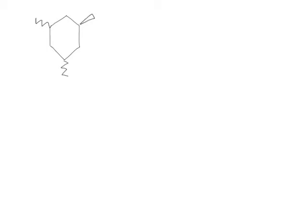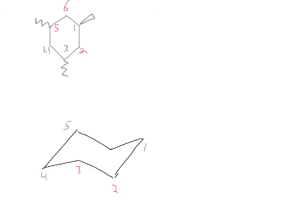The first step is to develop a numbering system so that we can tell one carbon from another. I'll go ahead and do that, starting with 1, 2, 3, 4, 5, and 6. We'll then draw our first chair conformer and map that same numbering system onto the chair: 1, 2, 3, 4, 5, and 6.